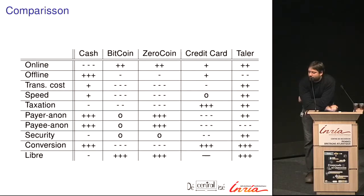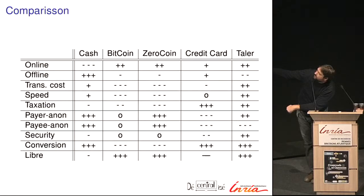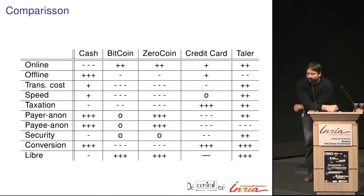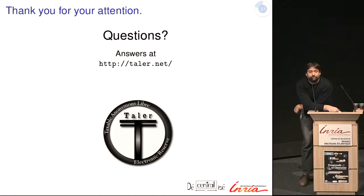Here's a comparison table with cash, Bitcoin, zero coin, credit card, and Taler. For me, what's important is anonymity for the payer — the payee is not anonymous, and we do not work offline — but on all the other dimensions, in theory we have the best of all worlds.